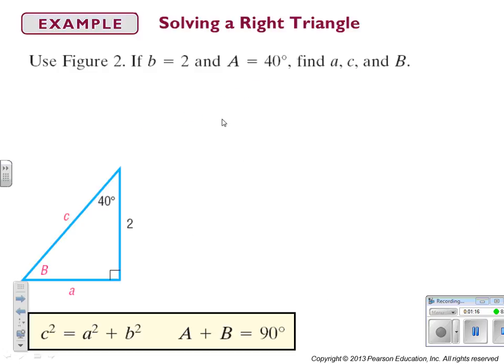If you have a triangle where one of your sides is 2, one of your angles is 40, if you're asked to solve the triangle, you have to find the missing angle and the other two sides. So, we find the missing angle by using that complementary formula. 40 plus B equals 90. If I subtract 40 from both sides, I get B equals 50.